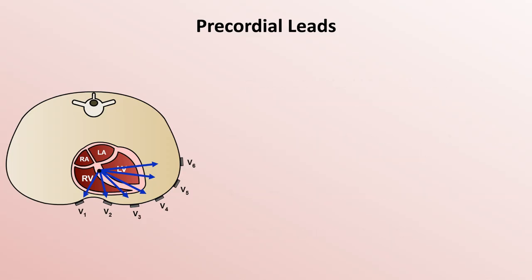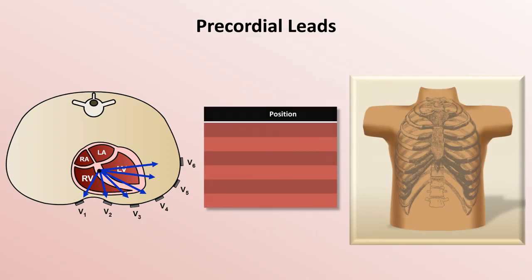The specific location to place the electrodes for the precordial leads is very important. Electrode V1 should be placed in the fourth intercostal space, just to the right of the sternum.